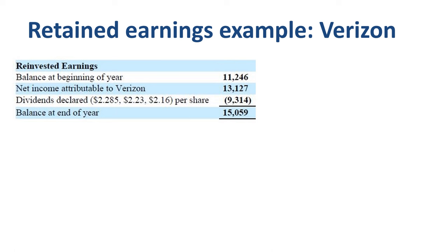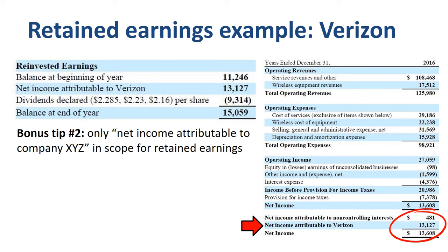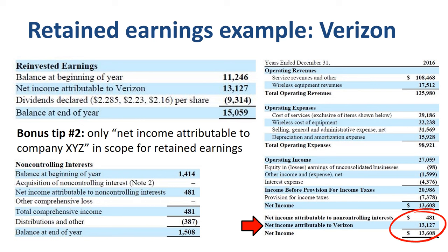The interesting element here is that only net income attributable to Verizon is taken into account. Verizon's income statement for 2016 shows revenue of $126 billion at the top and net income of $13.6 billion at the bottom. That total net income is split between about $500 million attributable to non-controlling interests — related to wireless partnership entities where Verizon is not a 100% owner — and $13.1 billion attributable to Verizon. Non-controlling interests is a line item in equity, and you can make a walk from beginning balance to ending balance just like with retained earnings.